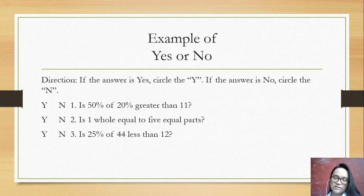Next is an example of yes or no. We have here the direction. If the answer is yes, circle the Y. If the answer is no, circle the N.